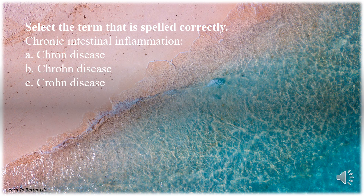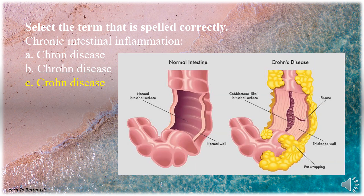Select the term that is spelled correctly. Chronic intestinal inflammation. A. Crohn disease. B. Crohn disease. C. Crohn disease. The answer is C. Crohn's disease.